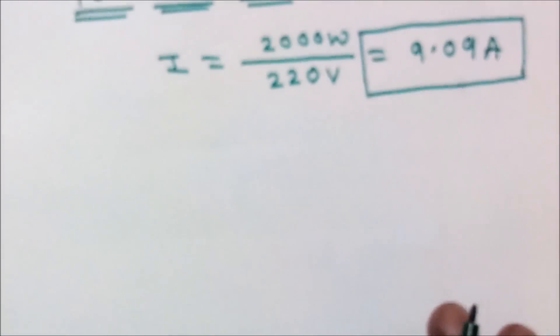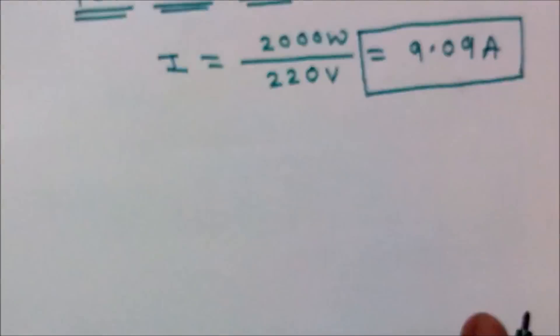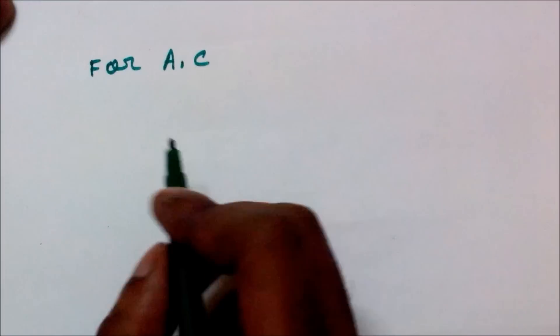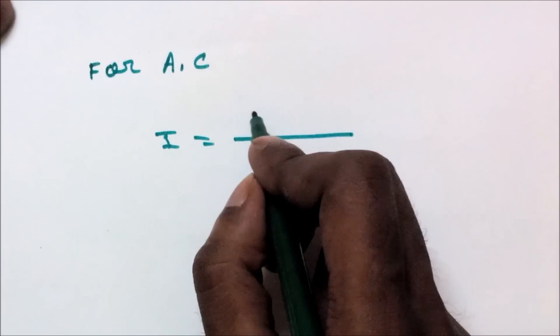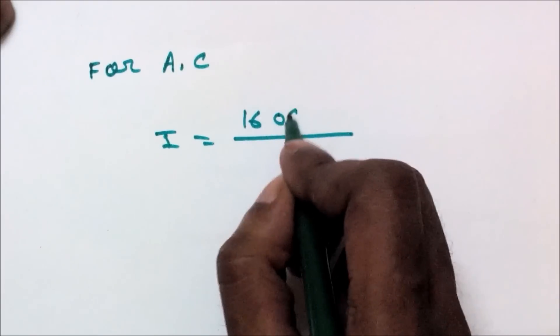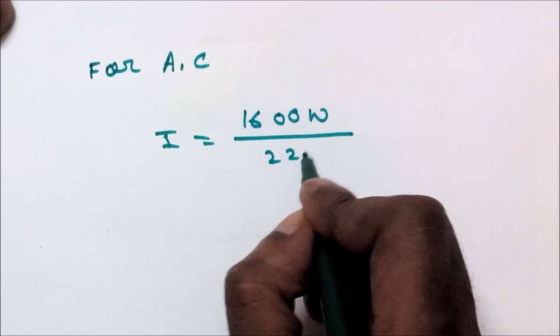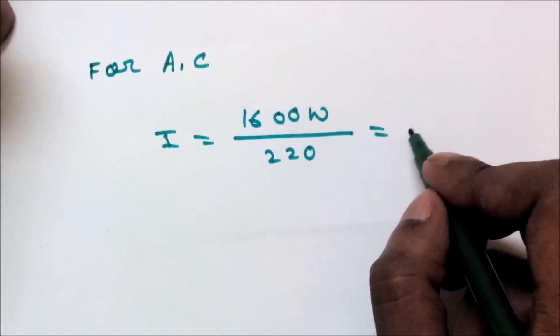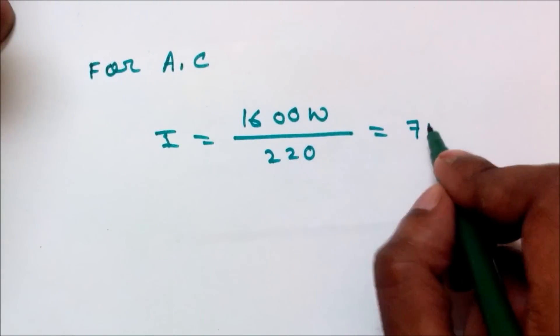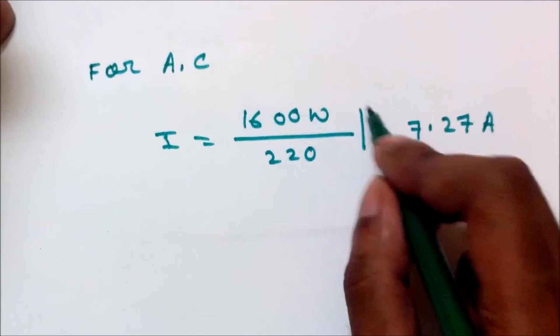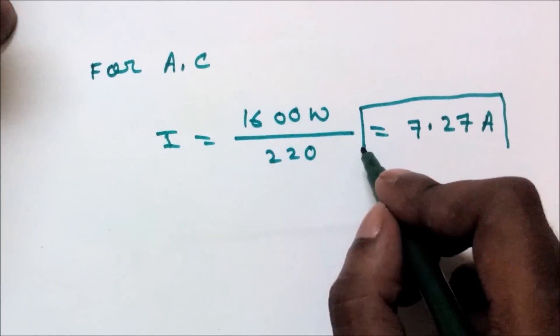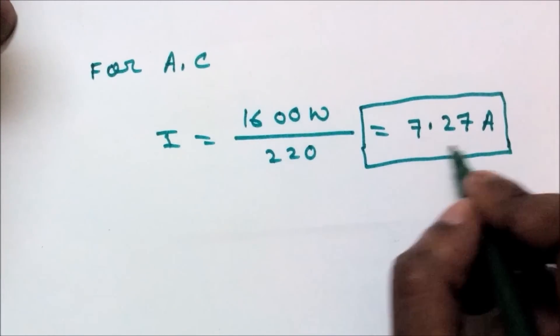And for AC, the full load current is I equals 1600 watt divided by 220, which gives 7.27 ampere. This is the full load current of AC.